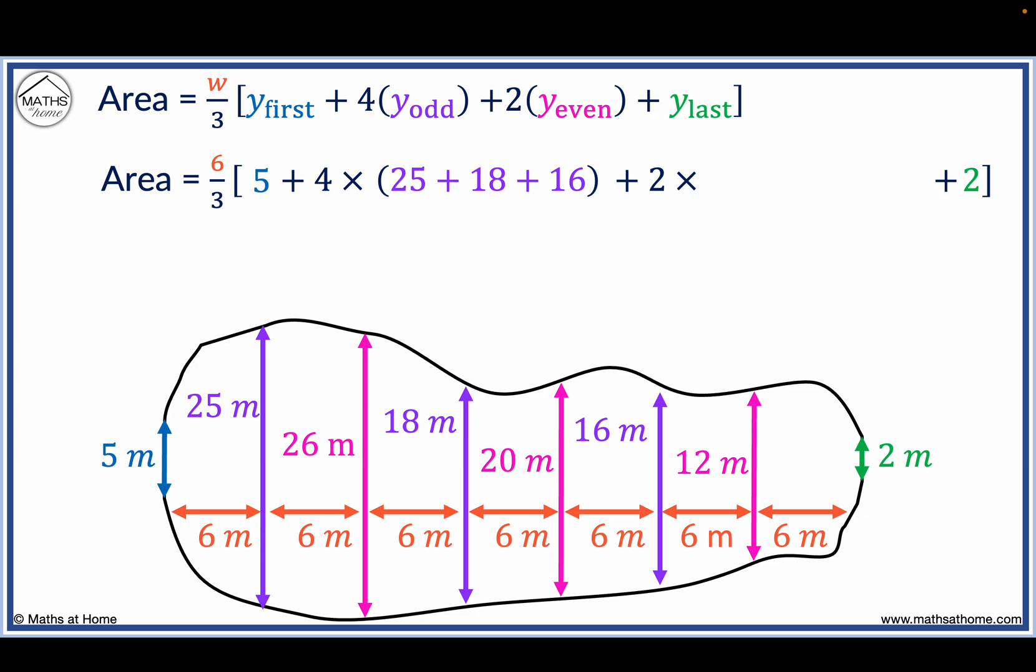The even measurements are the measurements in between the odd measurements: 26, 20, and 12. We add these inside brackets and they will be multiplied by 2.